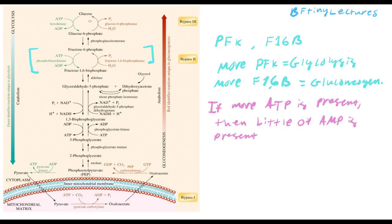More AMP means we're in an environment without much energy. It doesn't make sense to store glucose — instead, break glycogen, release glucose, and convert it to pyruvate to generate ATP. More AMP favors glycolysis. To summarize: PFK is inhibited by ATP, and fructose-1,6-bisphosphatase is inhibited by AMP. Gluconeogenesis converts pyruvate back into glucose for storage; glycolysis takes that glucose and converts it to pyruvate or lactic acid.